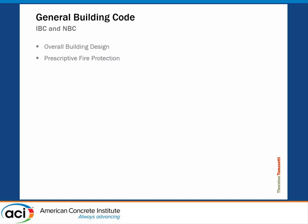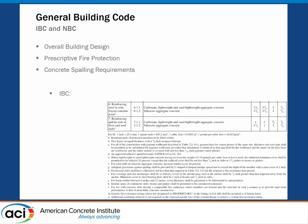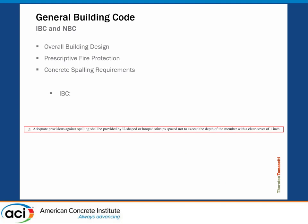Overarching building codes — IBC, National Building Code of Canada — they're roughly the same. NBC: no mention of concrete spalling. IBC is no better; they shove it at the end of a table in a footnote in Chapter 7. It reads: 'adequate provisions against spalling shall be provided by U-shaped or hooped stirrups, spaced not to exceed the depth of the member with a clear cover of one inch.' Very specific rules for apparently addressing spalling for all situations. I don't really agree that this is sufficient, but this is what IBC defines.